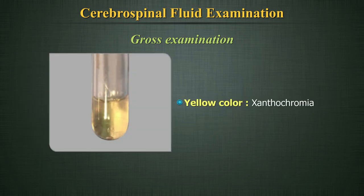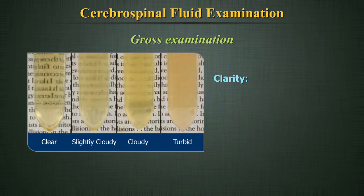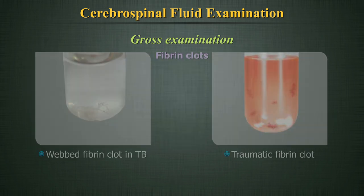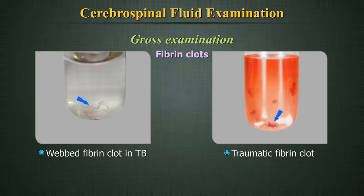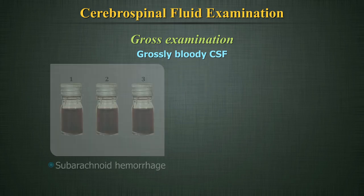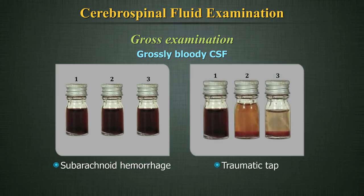Yellow colour in CSF is called xanthochromia, due to previous hemorrhage and lysis of RBCs. Clarity: Normal CSF is clear. Turbidity is seen when there is an increase in the number of cells. Coagula: Fibrin clots can be found if the protein content in the CSF is very high, or under a traumatic tap condition. It is possible to distinguish whether the presence of blood was due to subarachnoid hemorrhage or a traumatic tap.